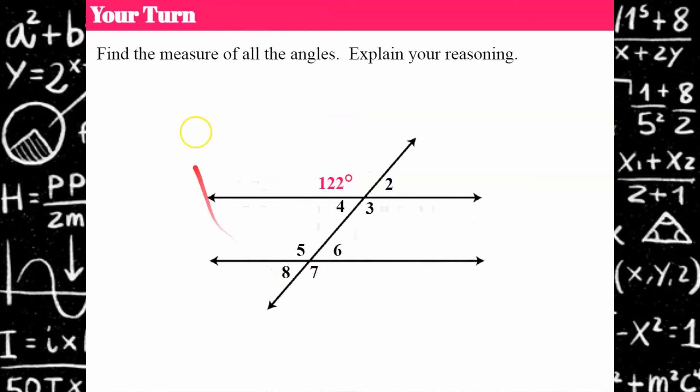Now I'd like you to find the measure of all the angles. There are seven missing angles, and every time you find one I'd like you to state at least one reason to defend your reasoning. Go ahead and pause and come back when you're ready.